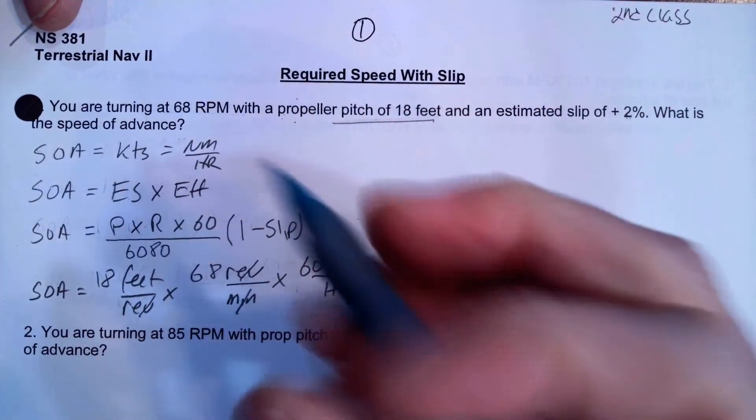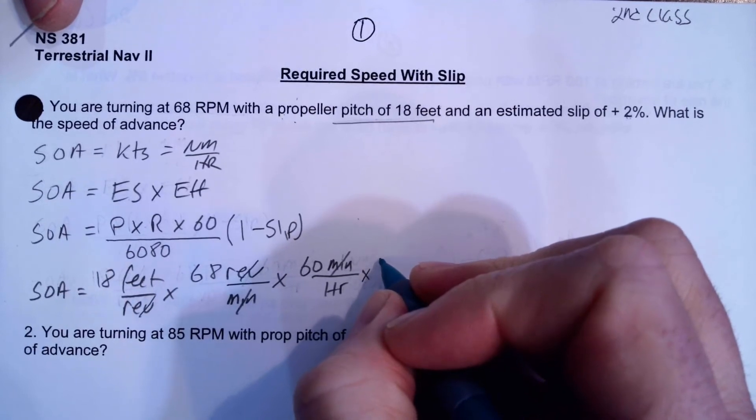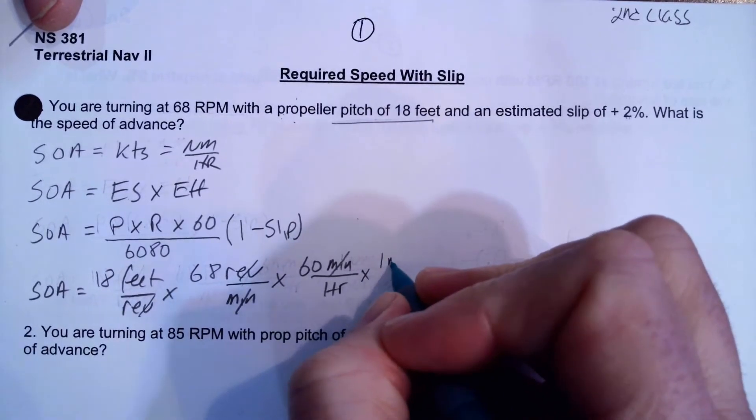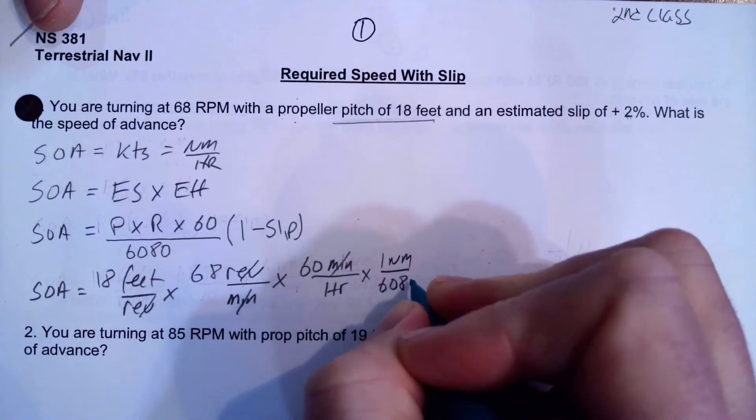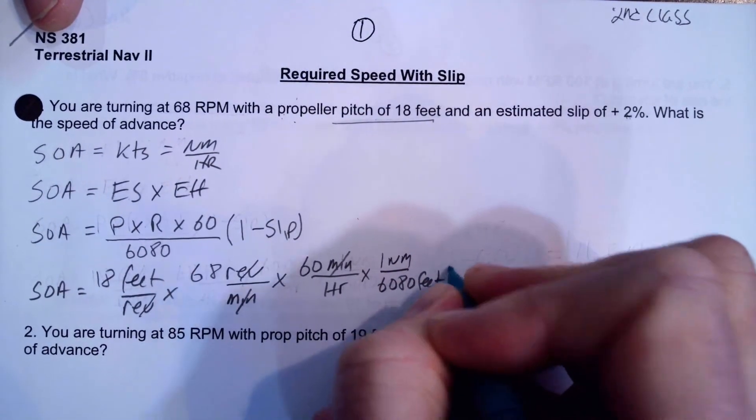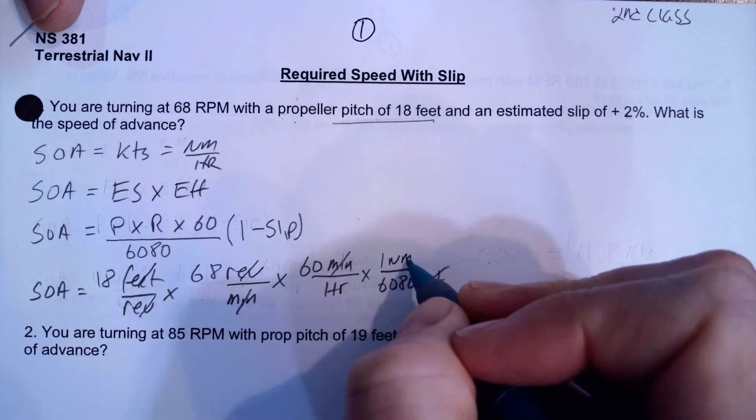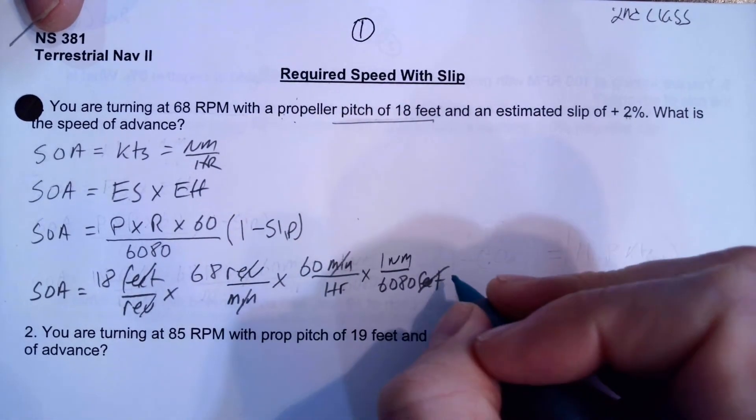And that is going to be, oh, now we need to multiply that by 1 nautical mile per 6,080 feet. And now what we're left with is nautical miles per hour, that's great. So that's our engine speed.